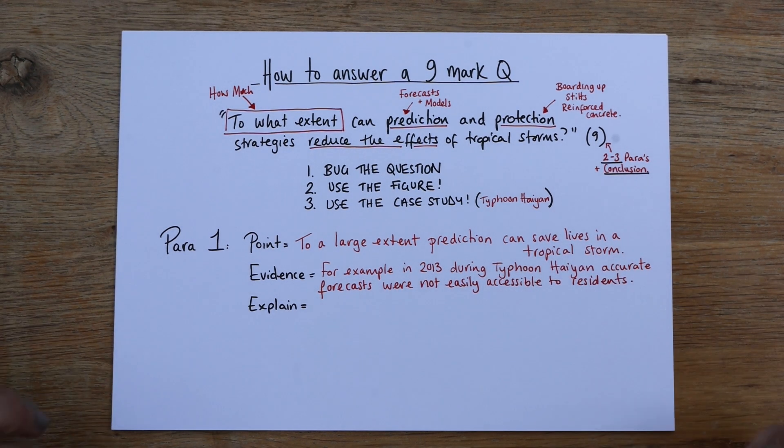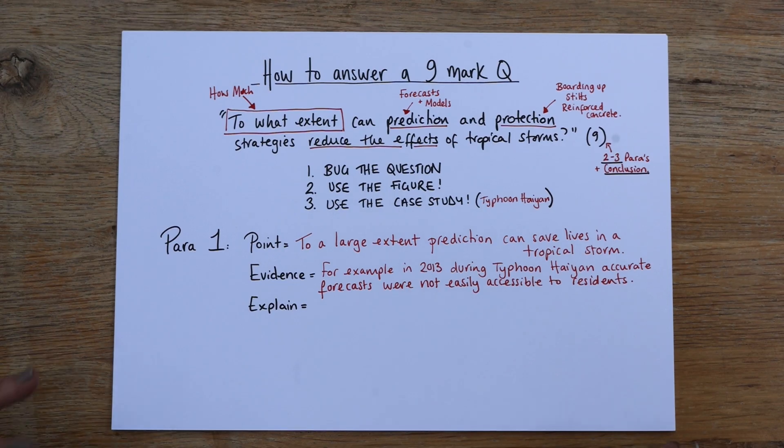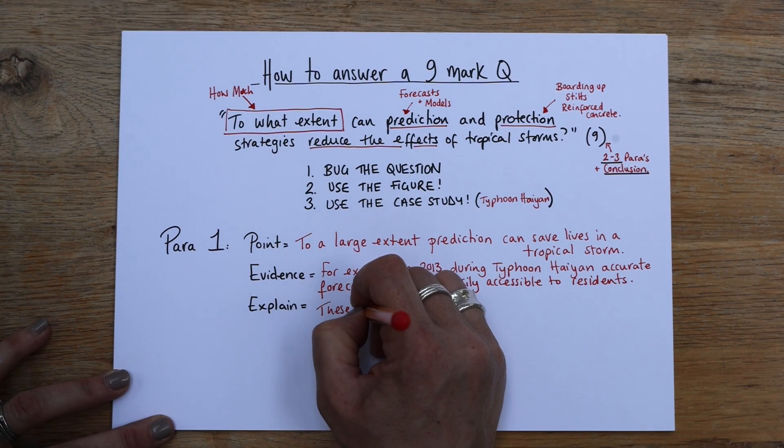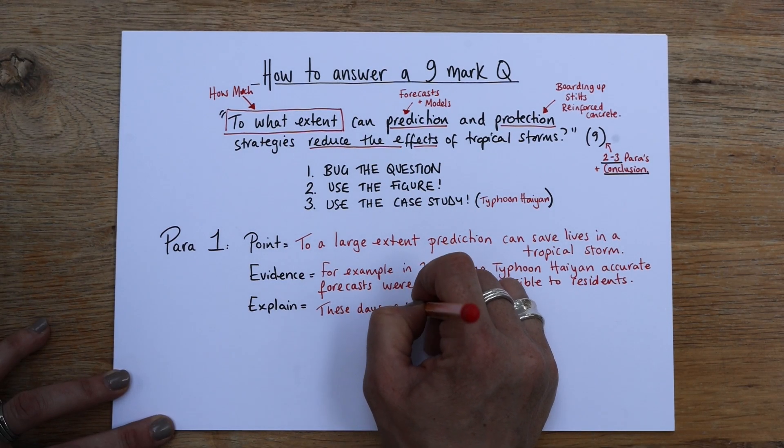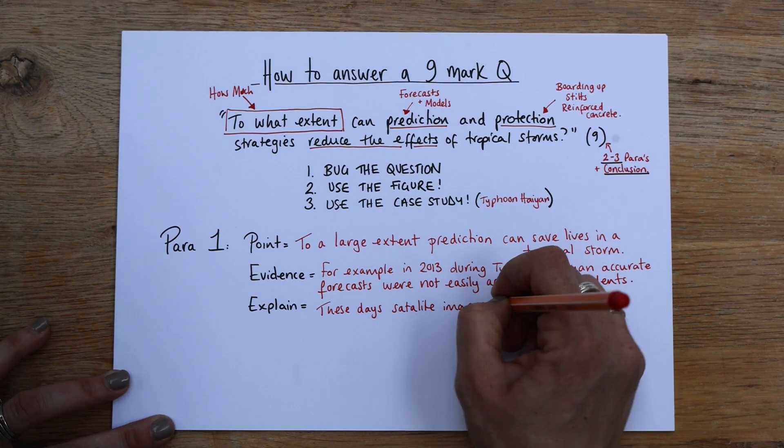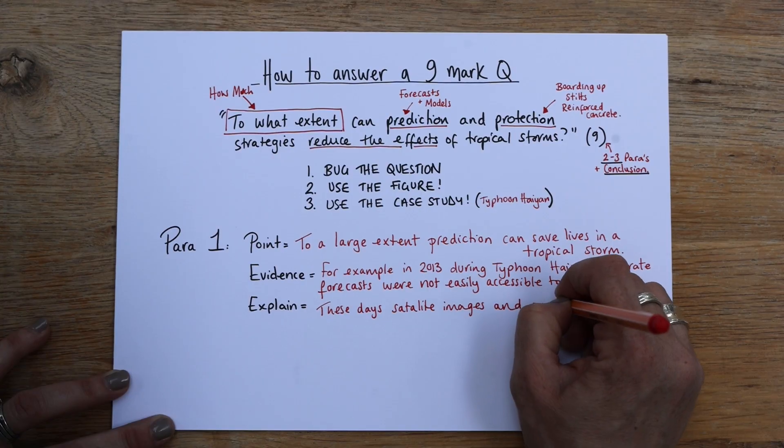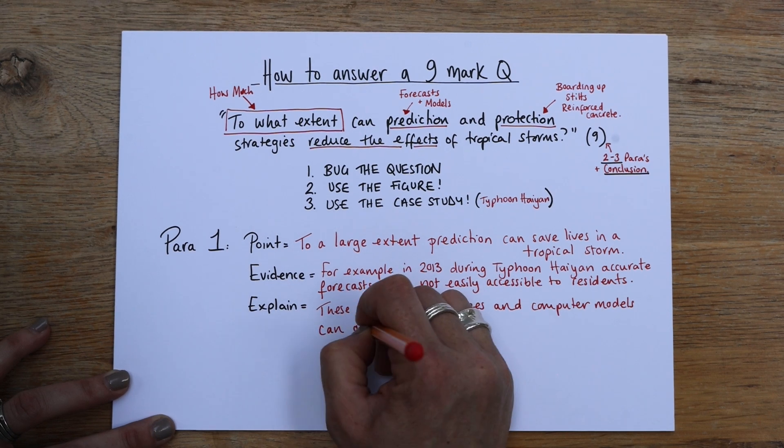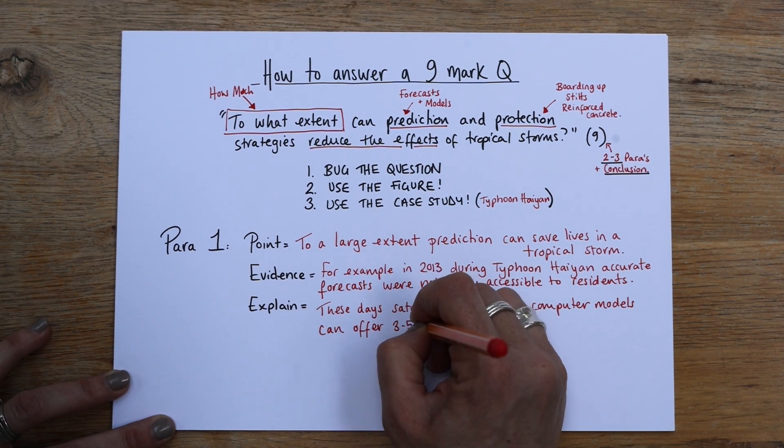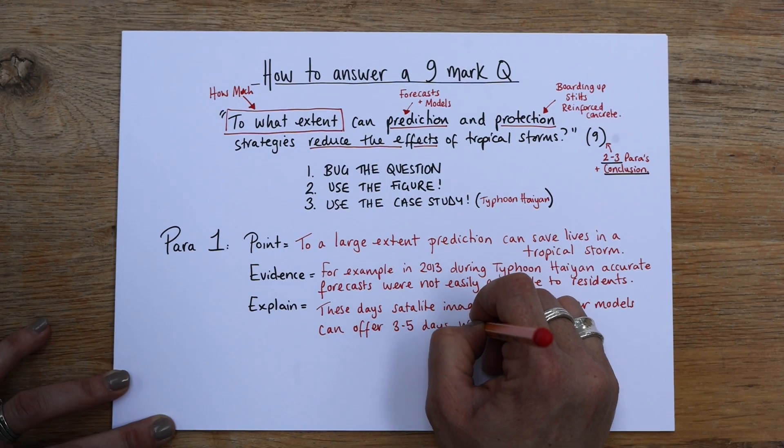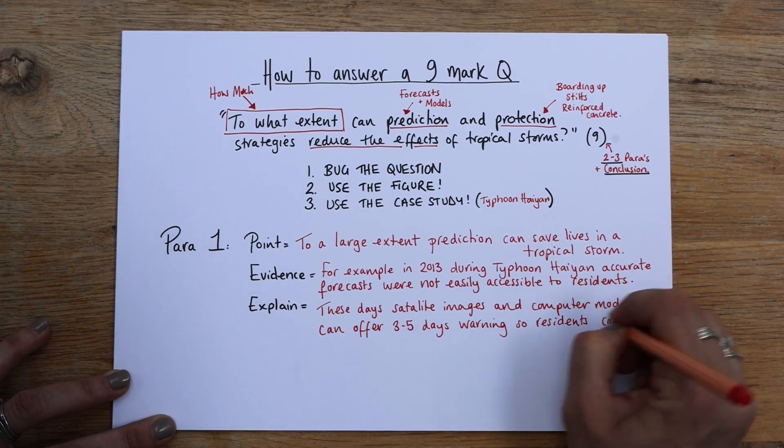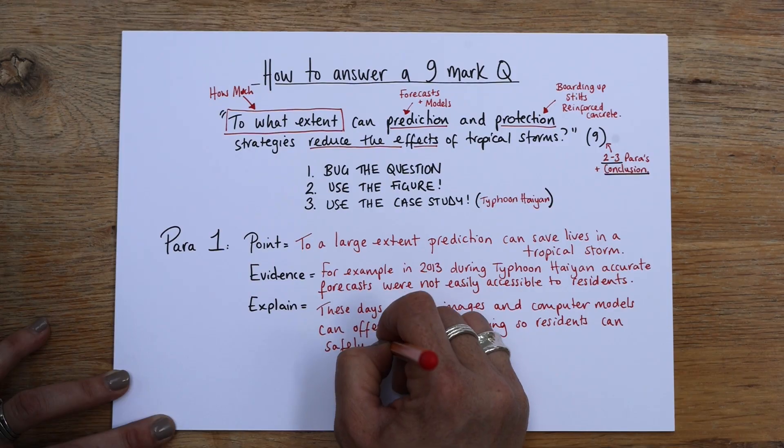So that means that basically people died who shouldn't have died. You know, they should have been able to have the time, at least three to five days to evacuate. So we're going to explain that. We're going to say, these days, satellite images and computer models can offer three to five days warning.